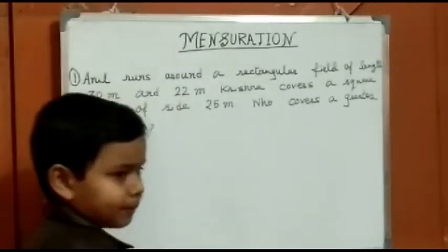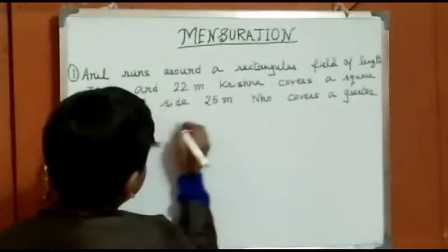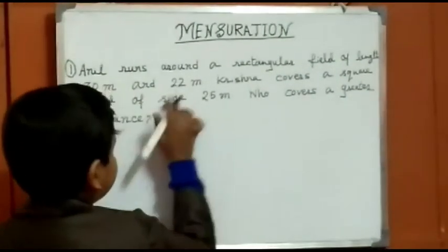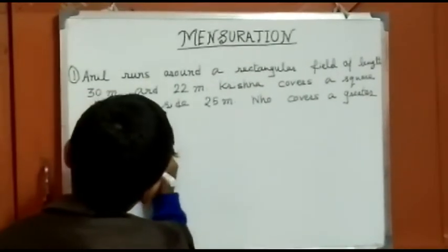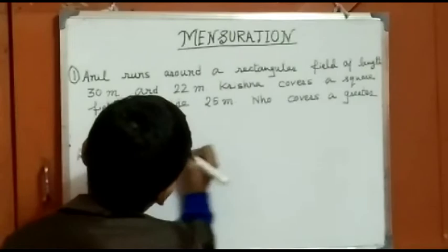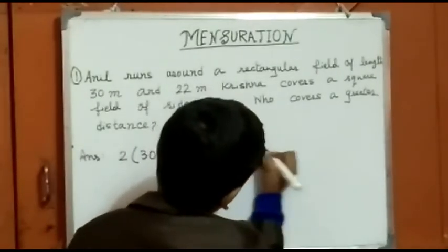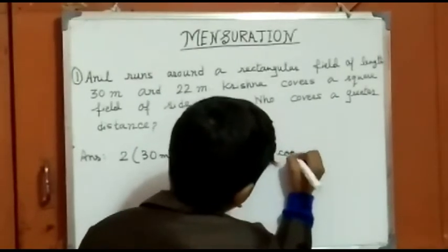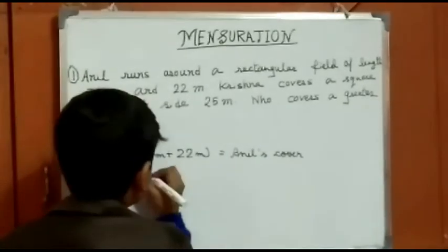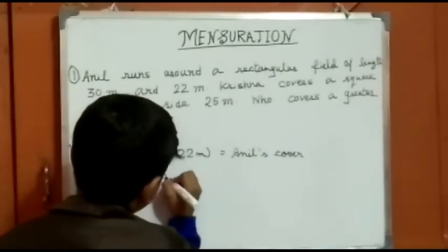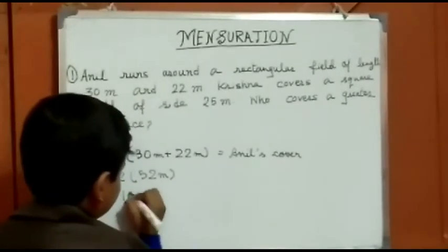So we know that perimeter of a rectangle is 2 bracket L plus B. So length is 30 m and breadth is 22 m. So it is 2 times 30 m plus 22 m. That is Anil's cover. So it is 2 plus 52 m, and 2 multiplied by 52 m is 104 m.